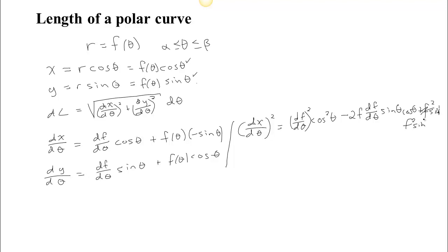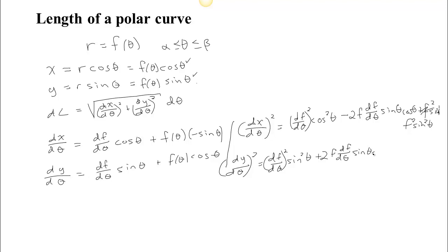f² sin²θ. And we get almost the same thing for (dy/dθ)². When we square it, we get (df/dθ)² sin²θ. Then we get 2f (df/dθ) sin θ cos θ, because that cross term appears twice. And then the product of the last terms gives f² cos²θ.